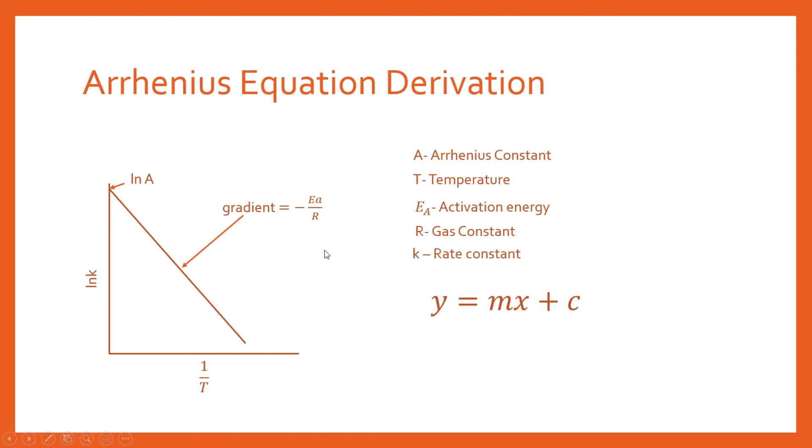We have a perfect straight line. And when you have a straight line, the obvious equation is y equals mx plus c, where m is your gradient and c is your y intercept.